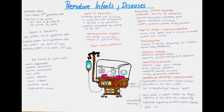Hyaline membranes are often high yield for exams — if you hear hyaline membranes, think respiratory distress syndrome. This is histological evidence of the disease. Treatment consists of giving oxygen to stop hypoxia. A CPAP machine — continuous positive airway pressure — can be used to help decrease atelectasis, so decreasing the sacs from collapsing.